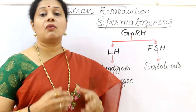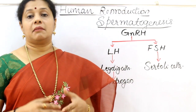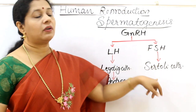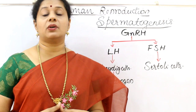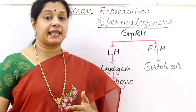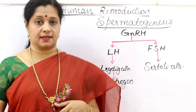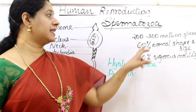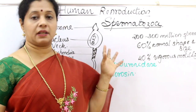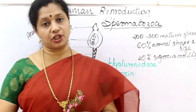FSH, follicle stimulating hormone, has a different function in males since males don't have follicles. It acts on the Sertoli cells — Sertoli cells must also develop in order to nourish the sperms — and it stimulates the secretion of certain factors helpful in spermiogenesis. Males ejaculate almost 200 to 300 million sperms, of which 60% should have proper shape and size, and 40% should have vigorous motility for fertilization to occur.